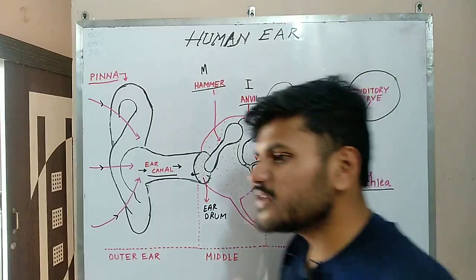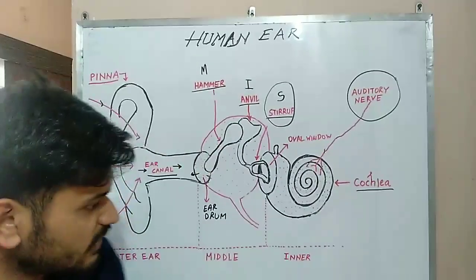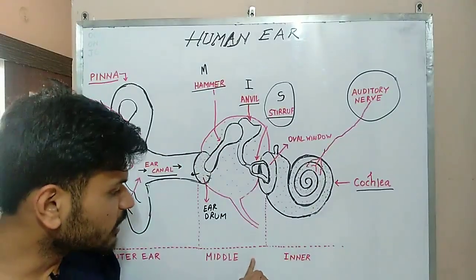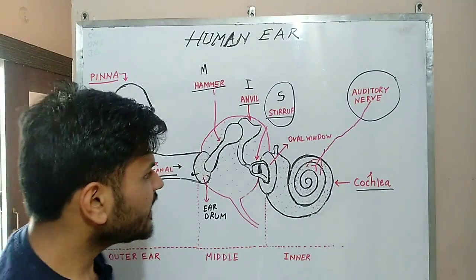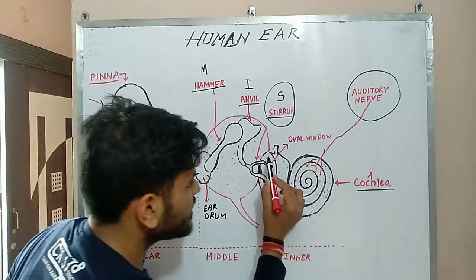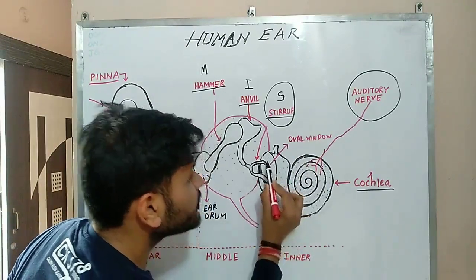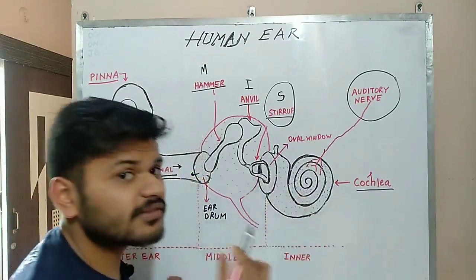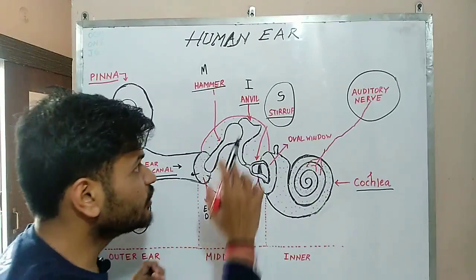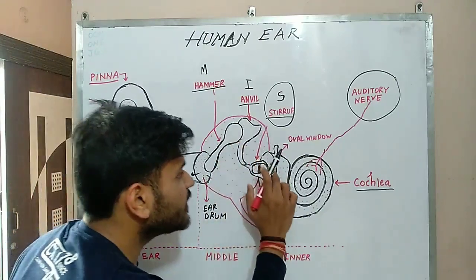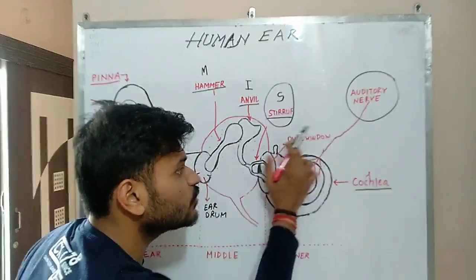The middle ear transfers the amplified vibrations into the oval window, which is located at the termination region of the middle ear. The oval window receives the sound vibrations that have been increased in magnitude by the middle ear bones.